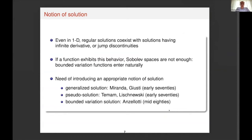Even in one dimension, a regular solution may coexist with a solution having either infinite derivative or jump discontinuities. If we want to describe these kinds of patterns, Sobolev functions do not suffice, so bounded variation functions enter in a natural way. But if we want to consider BV functions in this setting, we need to introduce an appropriate notion of solution. This kind of solution has been considered in the literature since the 1970s or even before.